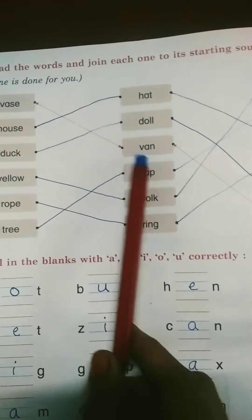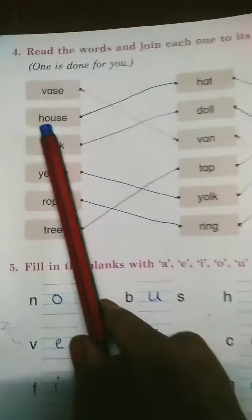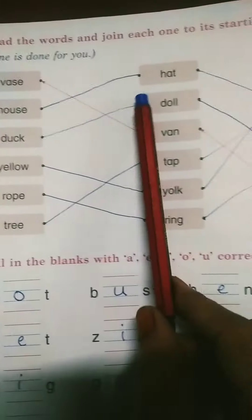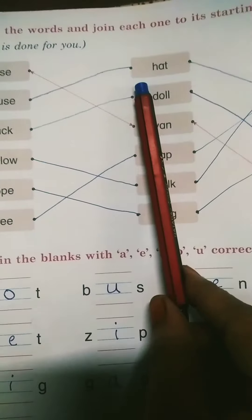So we have to match the same sound words. Was, van. House: h-o-u-s-e, house. H-o-t, hat. Okay students?